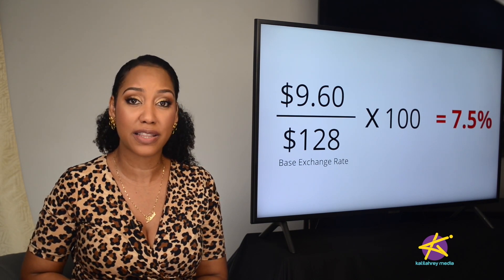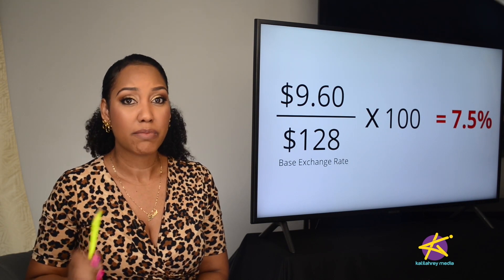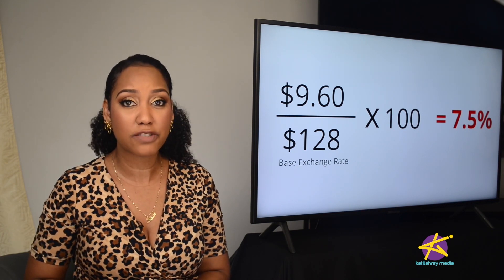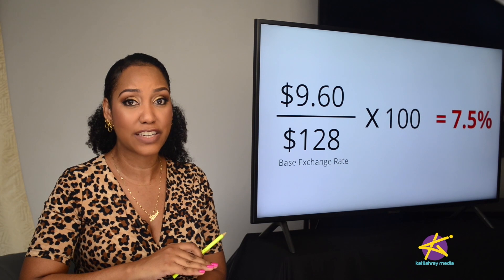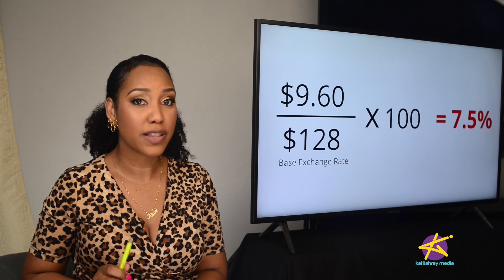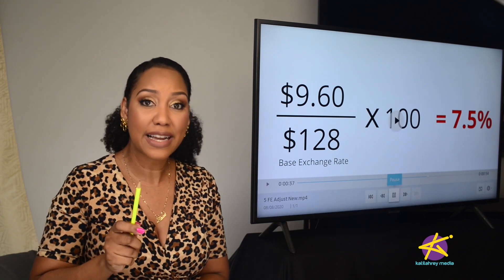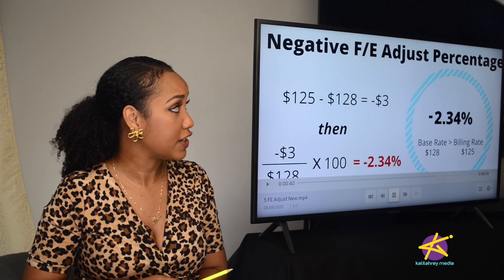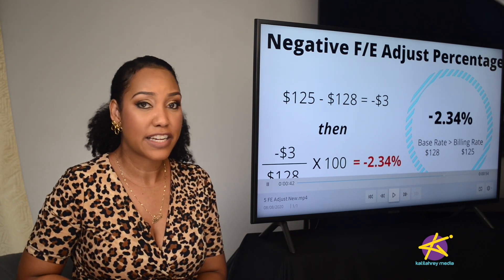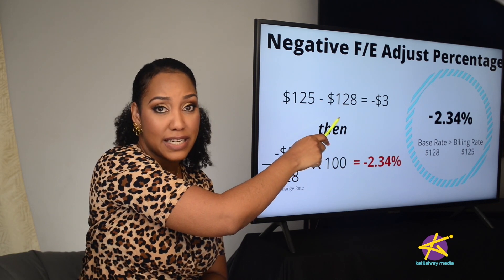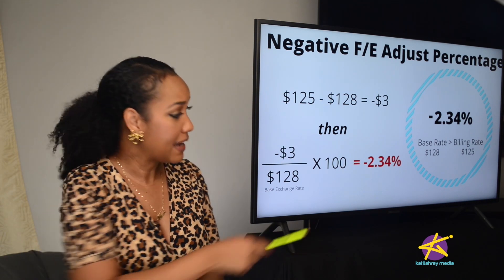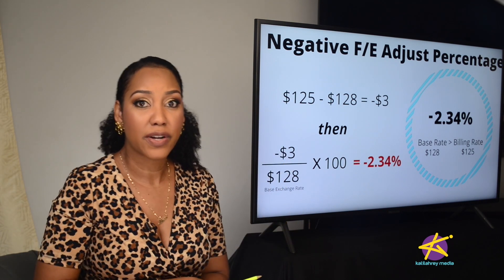If the Foreign Exchange percentage is a positive number like it is this month, that means the billing exchange rate for that month is higher than the base exchange rate. But because our currency technically moves two ways now, there may be times when the billing exchange rate is actually lower than the base exchange rate. If and when that happens and you run the calculation, you're going to end up with a negative number as the Foreign Exchange Adjustment. So let's say the base exchange rate is 128 and the billing exchange rate for the month is 125 — using the same calculations, we'll end up with a negative percentage.